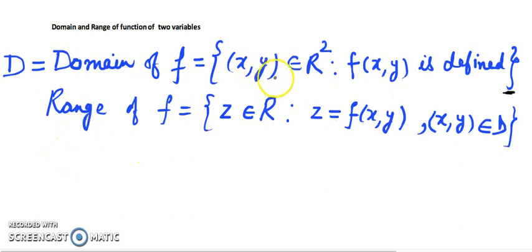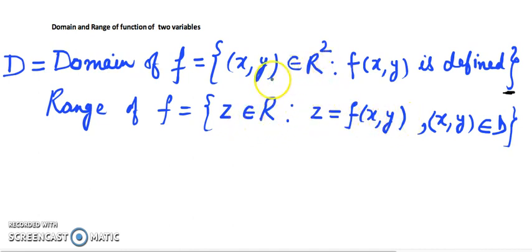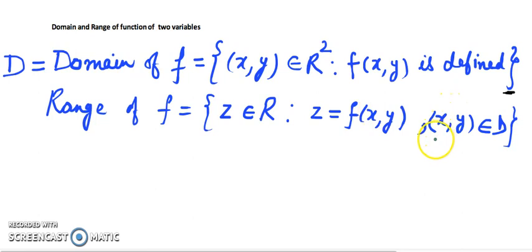If you are given that you select pairs from ℝ² and for those corresponding x and y variables you get z = f(x,y), that z is dependent upon those selections. Whatever pairs you are selecting, you get a z out of it, and that z is known as the range of the function. Now we are going to find domain and range with some examples.